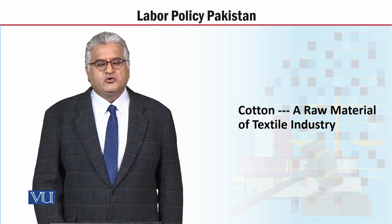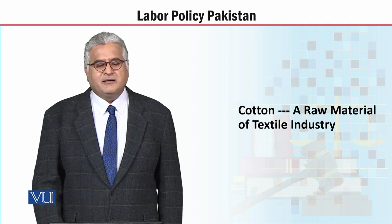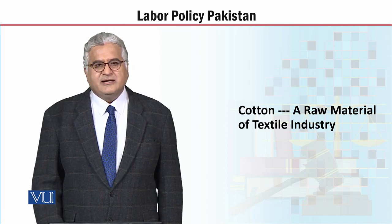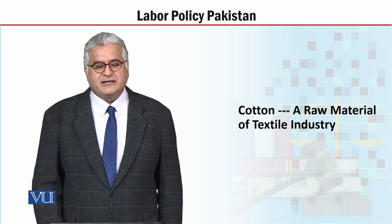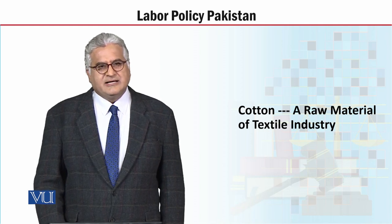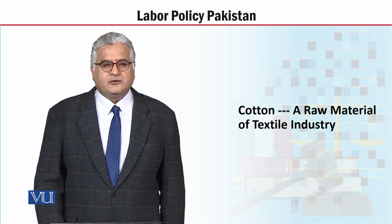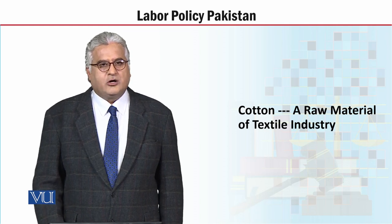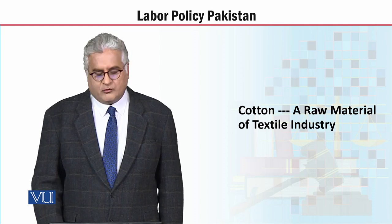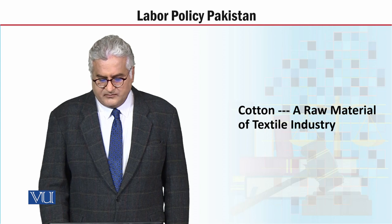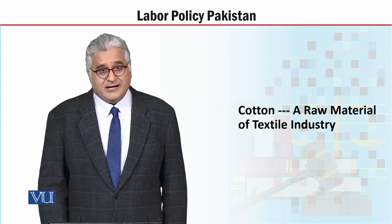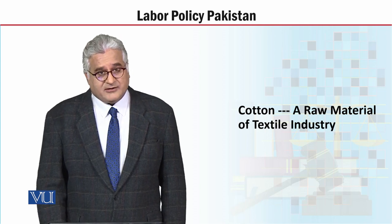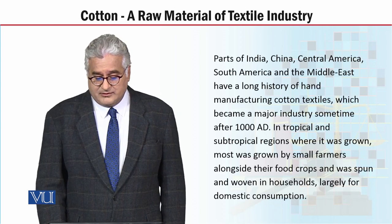The industrial revolution came, machines were made, but England had no raw material for themselves to produce or cultivate. So let's see where cotton, which is a raw material, England or Europe sourced during the industrial revolution and after the industrial revolution.